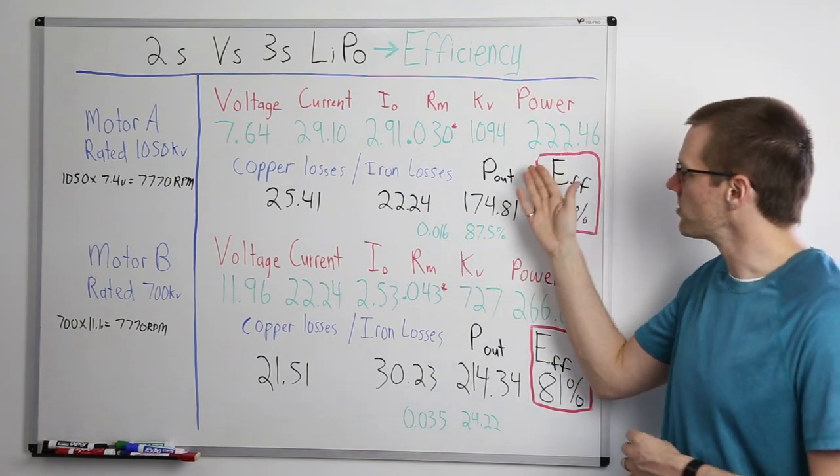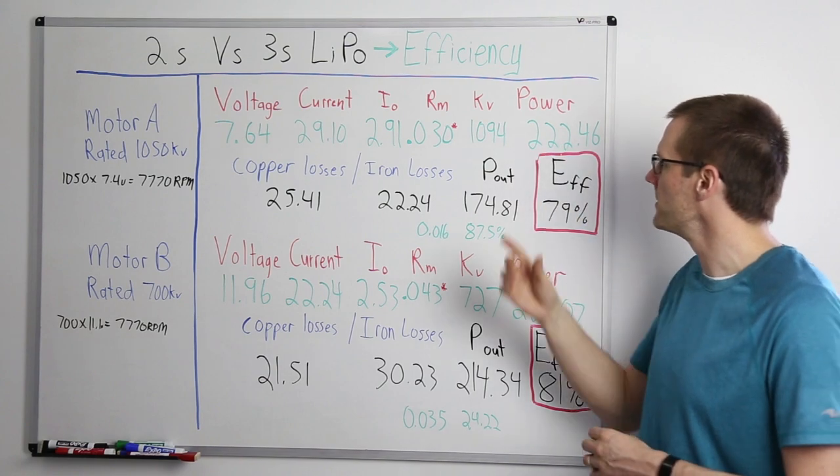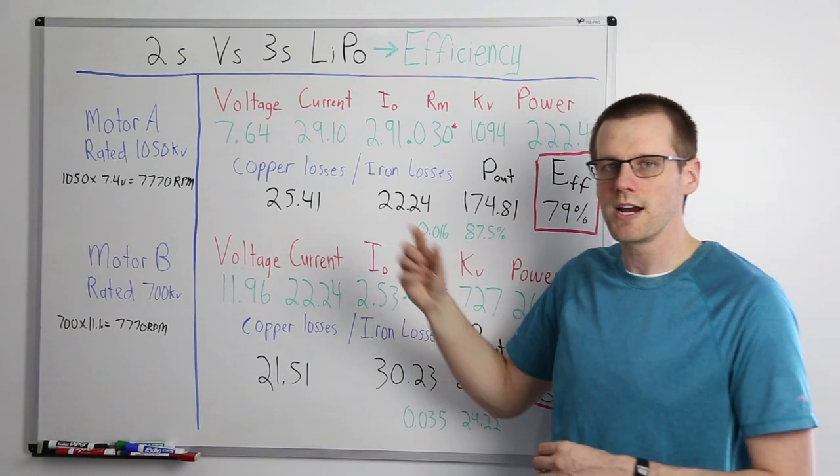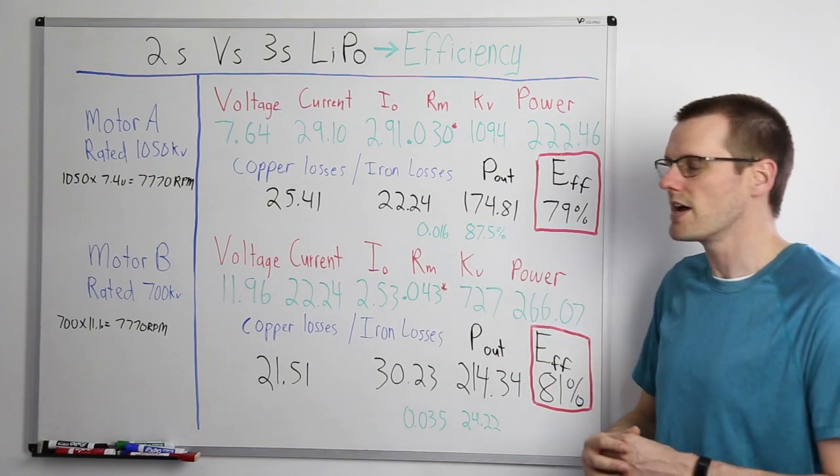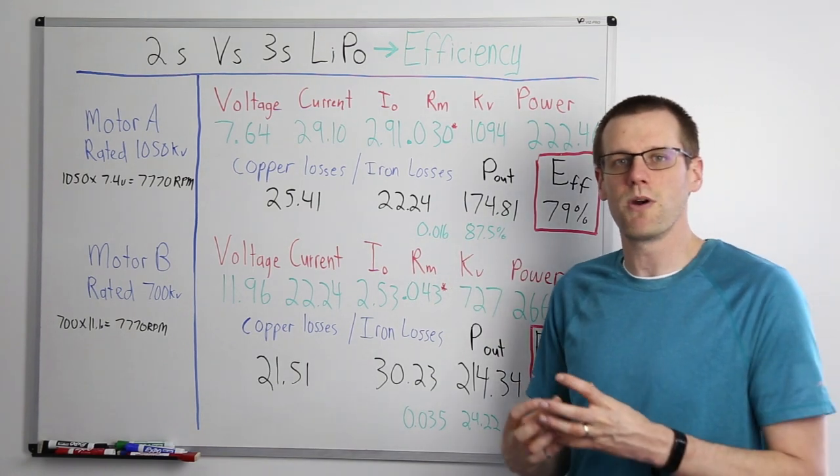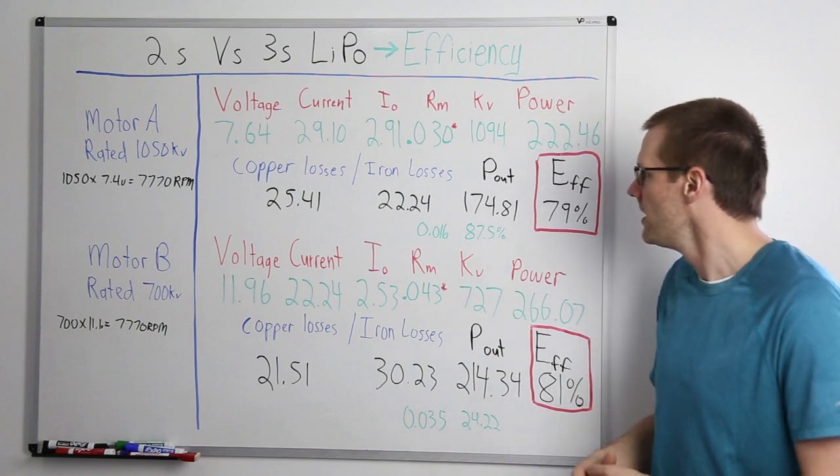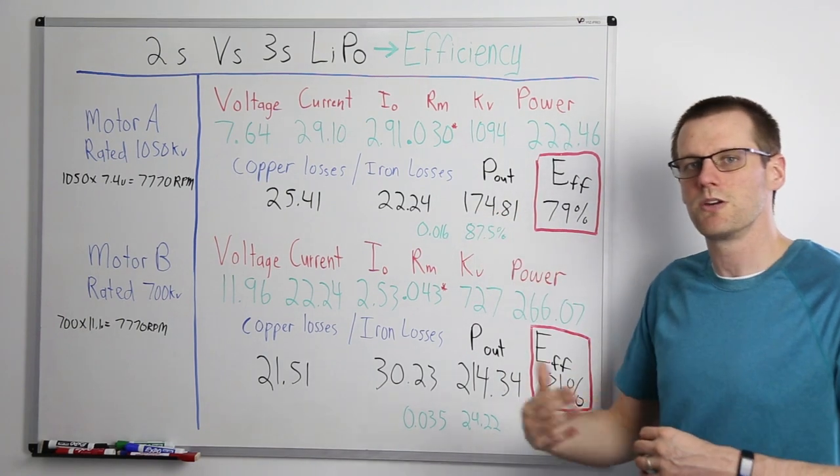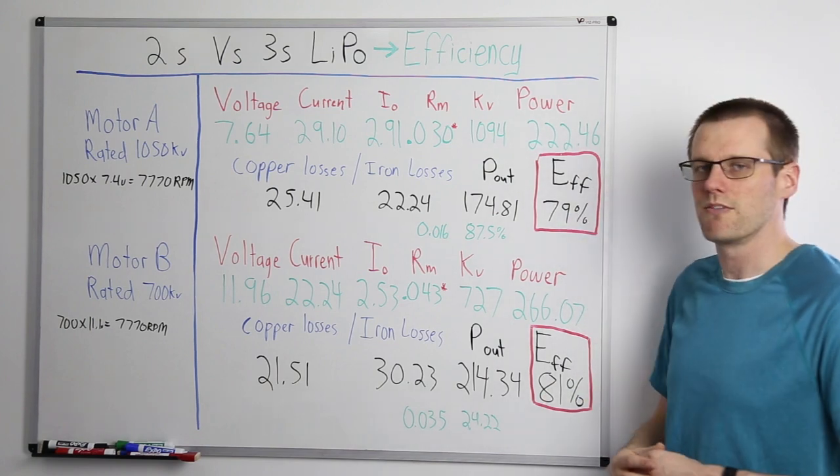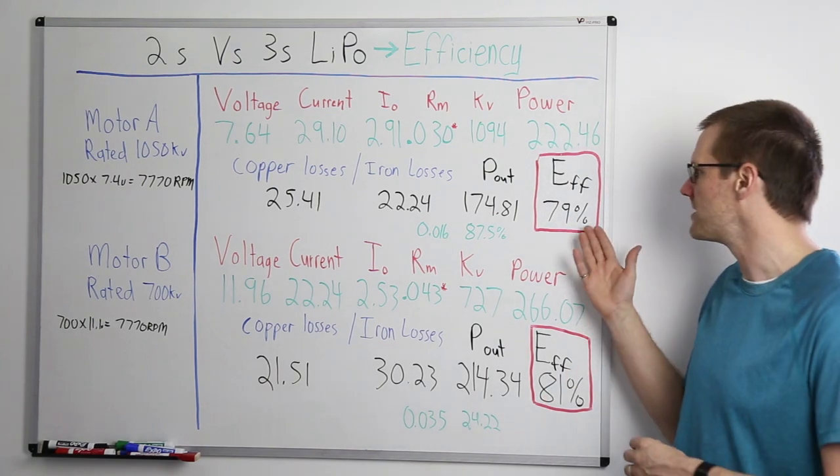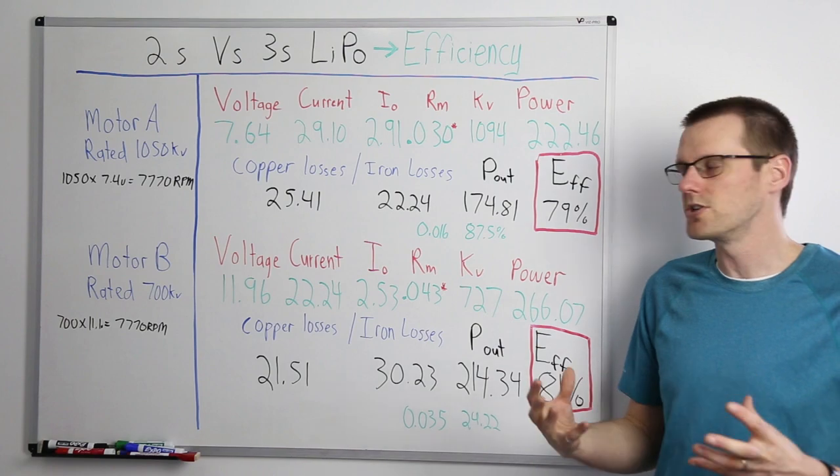Now, what this does is it subtracts right out from the power input. We take our 222, we subtract out our 25 and our 22, and we end up at 175 watts of power out that we get from our motor. Now, if we go and take our power out and we divide it by our power in, that's going to be the efficiency of a motor. In this case, it's going to be 79% efficient.